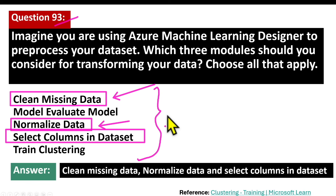The select columns in dataset module allows users to choose a subset of columns from the dataset that are most relevant for the machine learning task. This helps in focusing on important features and removing unnecessary ones.